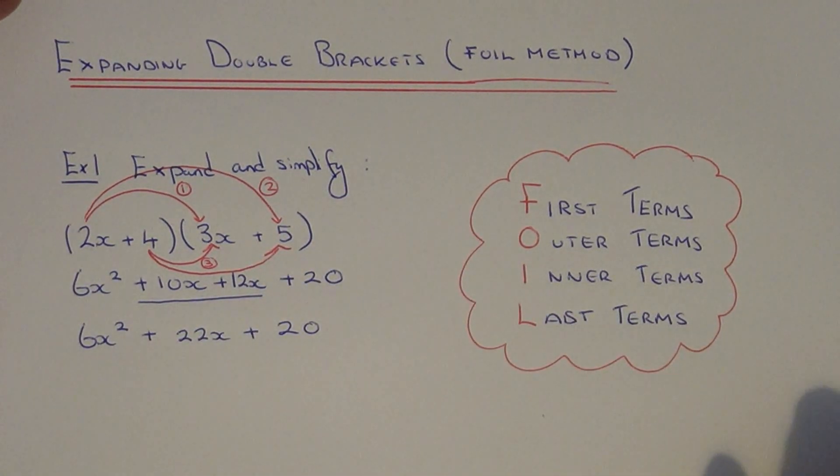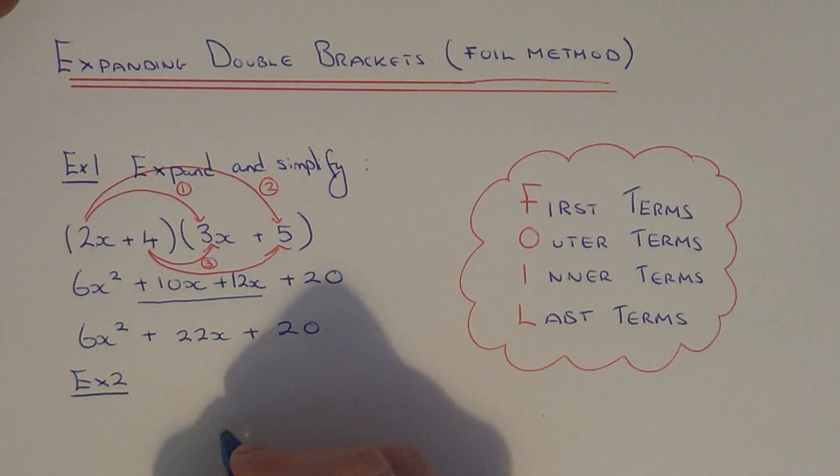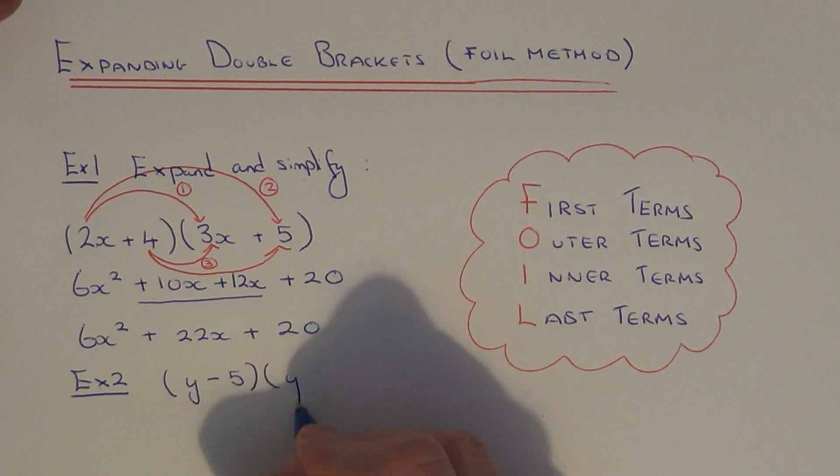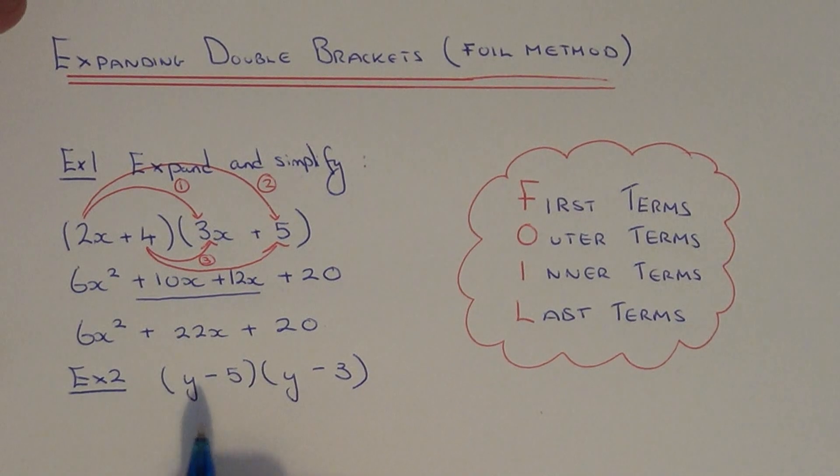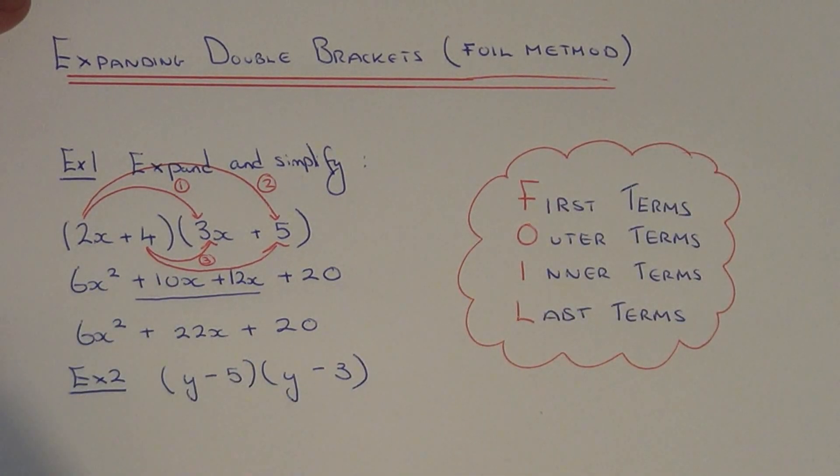So let's do one more example. Example two. This time we are going to expand and simplify y minus 5 and y minus 3. So we need to be careful now because we have negative terms here and here. But if you follow the method FOIL we should be okay.